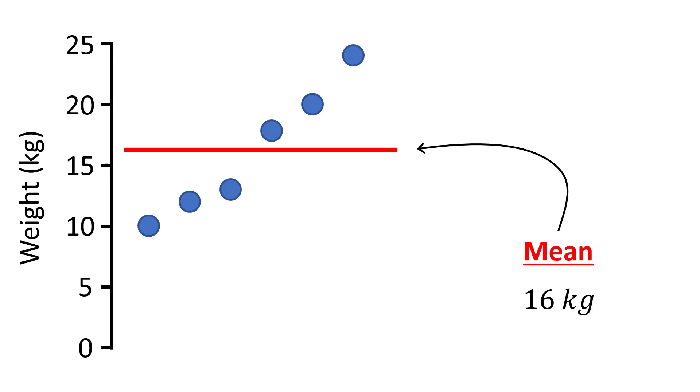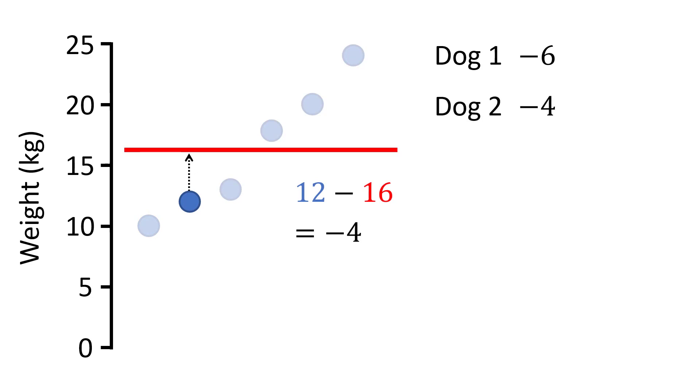In the next step we need to take each of these data points and work out how far away it is from the mean value. So let's say the first dog which weighed 10 kilograms. Here I would work out 10 subtract 16 which is negative 6. The next dog weighed 12 kilograms so 12 subtract 16 would give negative 4.